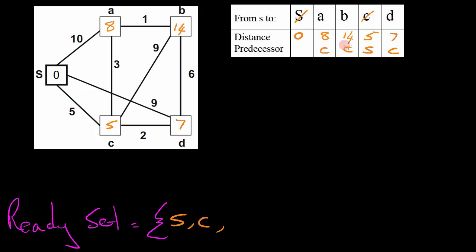The loop continues and we select the node with the shortest distance from those not yet in the ReadySet. Looking at the 3 remaining nodes, D has the shortest distance and we start at D to see if we can find shorter paths to its neighbors. D is connected to S and C, but both are already in the ReadySet so those paths are ignored. The only node not yet in the ReadySet is B. D has a distance of 7; adding 6 gives us 13, which is less than 14, so we update B's distance to 13 and its predecessor to D. Since there are no other nodes connected to D, node D is added to the ReadySet.